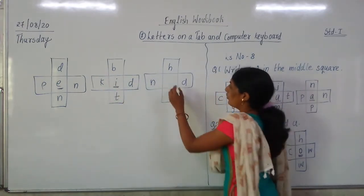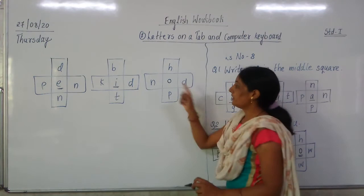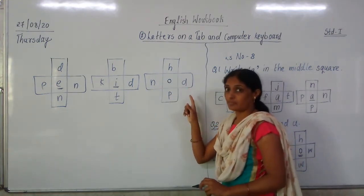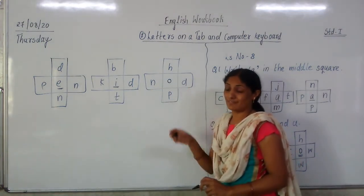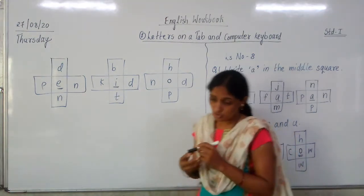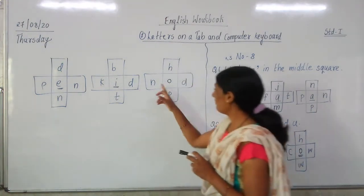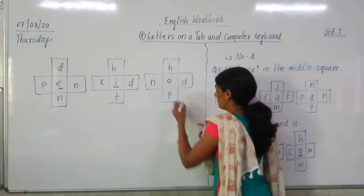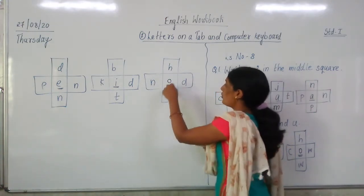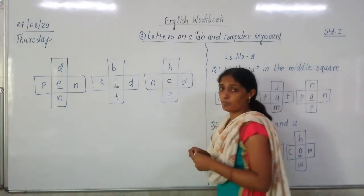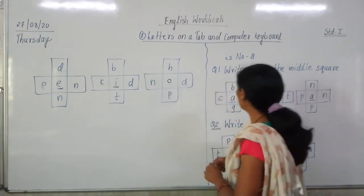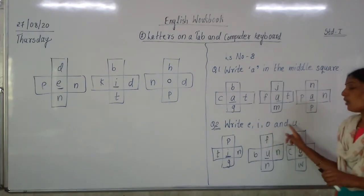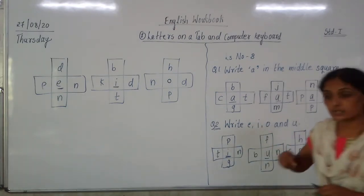After that H and O — if I write O here it will become N-O-D and N-O-D-E. Nod means to shake your head. So N-O-D and H-O-E. In this way we have completed Question number 2 by adding E, I, O and U in the middle square.